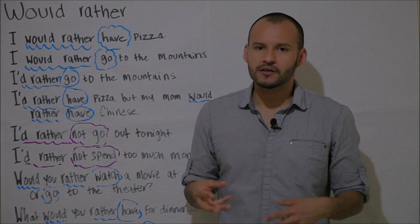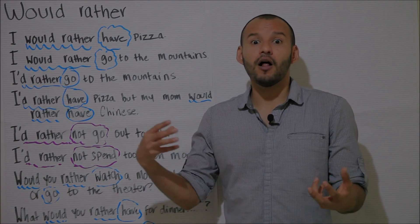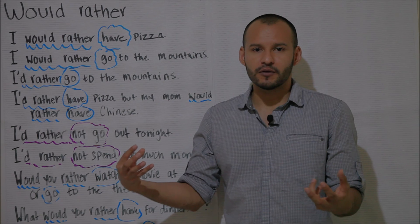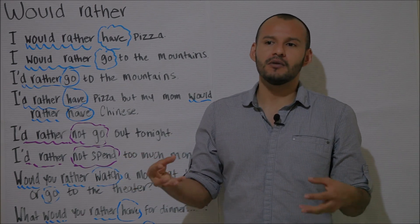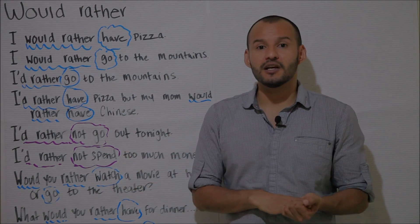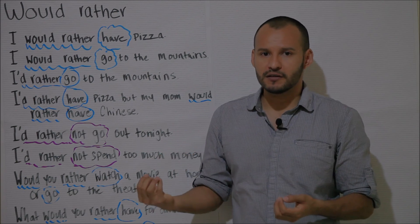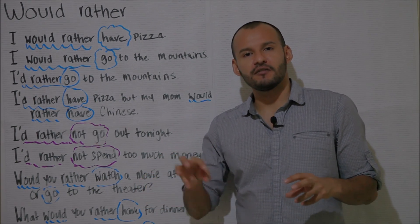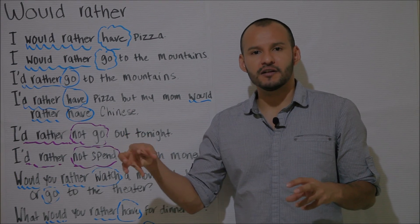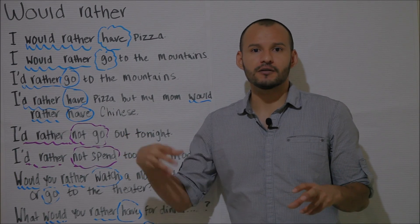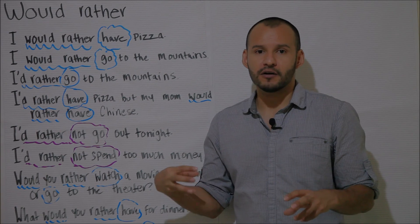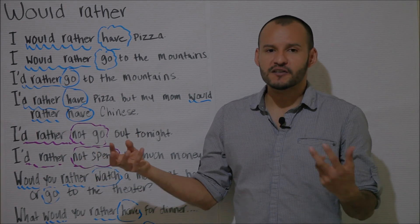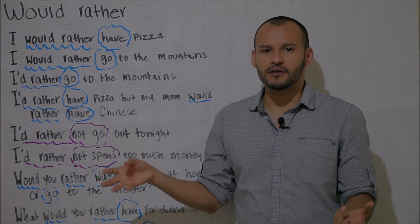Now at the beginning of the video I told you that would rather is almost identical to the verb prefer. So this is probably a good moment to tell you the main difference. Basically with the verb prefer it is possible to use a verb in the infinitive form. So for example, I prefer to go to the mountains or I prefer to have Chinese food, but it is also correct if you simply use a noun.